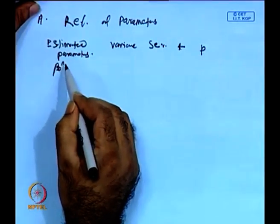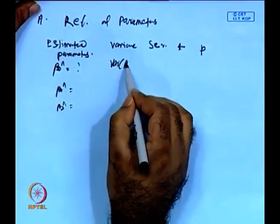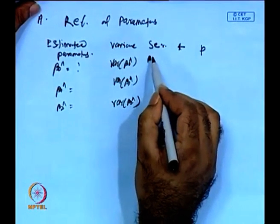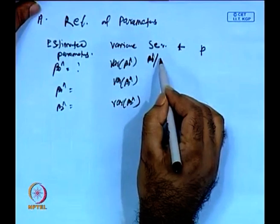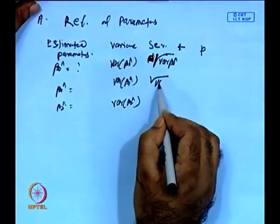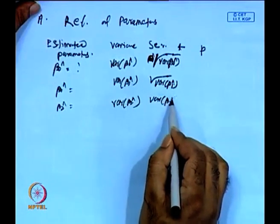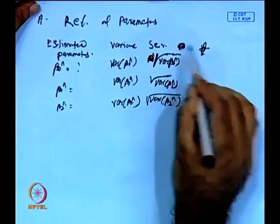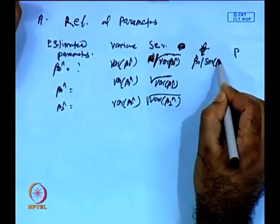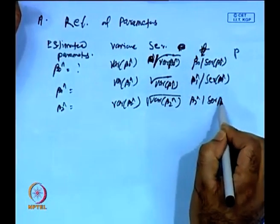We receive beta0-hat, beta1-hat, beta2-hat, and corresponding variance of beta0-hat, variance of beta1-hat, variance of beta2-hat. The standard errors are the square root of each variance. The t-statistic T is beta0-hat divided by standard error of beta0-hat, then beta1-hat divided by standard error of beta1-hat, then beta2-hat divided by standard error of beta2-hat. Then we check the corresponding probability.